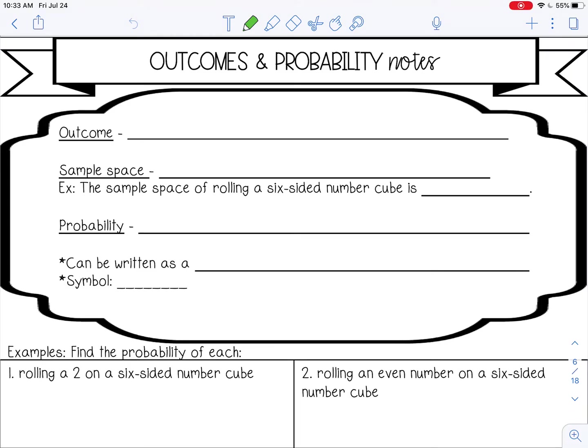Welcome to this lesson on outcomes and probability. An outcome is a possible result of an event or experiment.